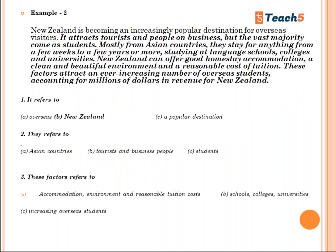The next example: New Zealand is becoming an increasingly popular destination for overseas visitors. The question is: what does 'it' refer to? New Zealand is becoming an increasingly popular destination — 'it attracts tourists.' Which is attracting tourists? 'It' is referring to New Zealand.